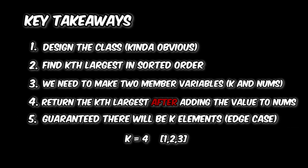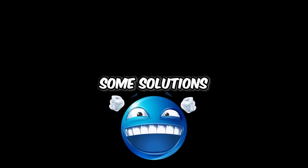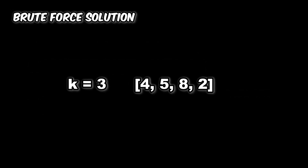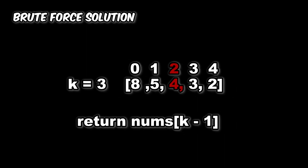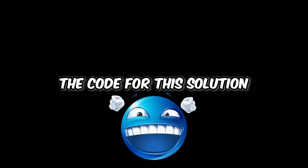So we won't have a situation where k is greater than the length of nums. Let's start thinking about some solutions. The brute force solution is that in our nums array, every time we add a number we store it in the array, sort the array in descending order where the largest element is at the top, and then return the kth largest by returning the element at index k minus one, since k is not zero-indexed like our array.